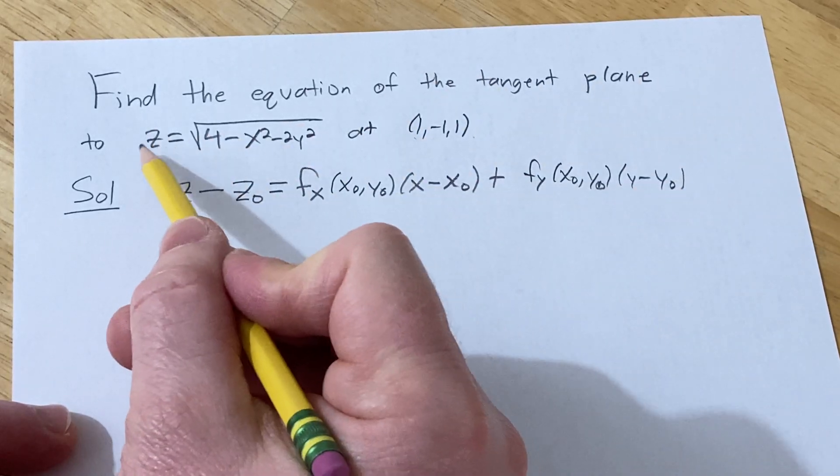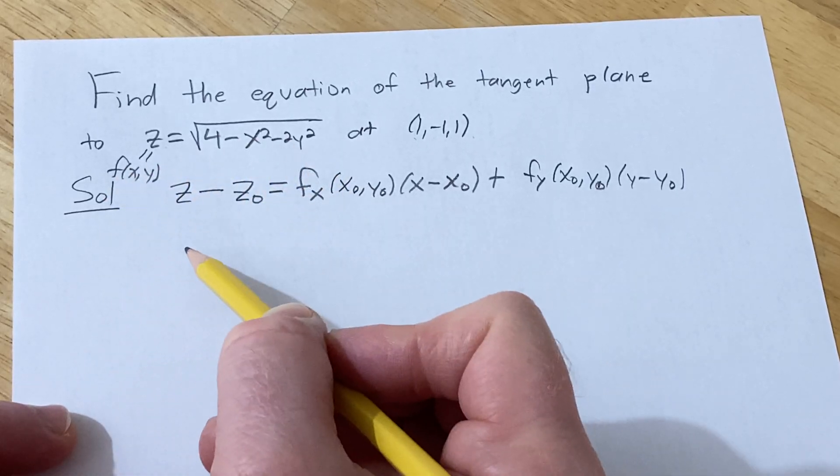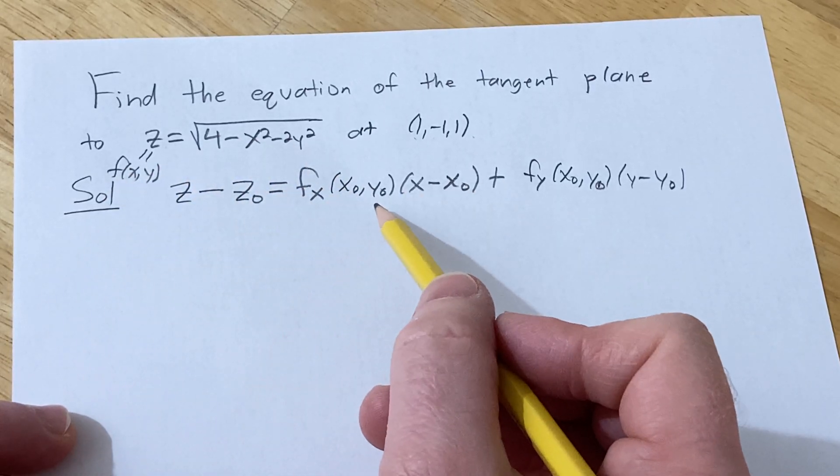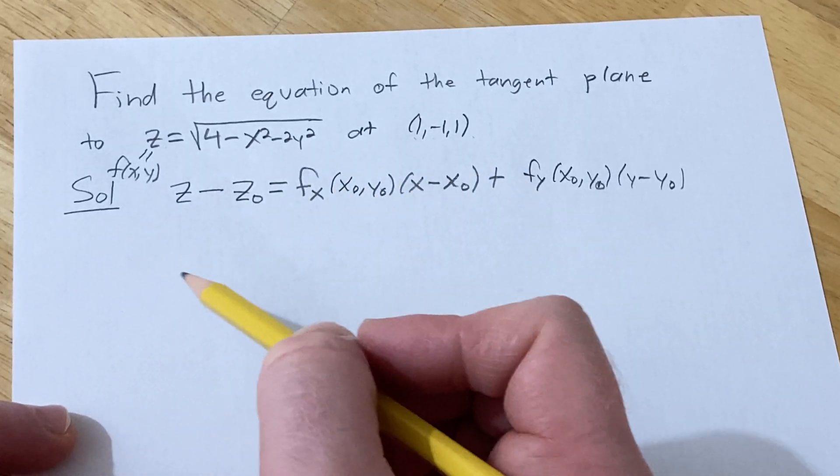In this particular problem we can think of z as a function of two variables, f of xy. So basically all we have to do now is find the partial derivatives and plug everything in and we're good to go.